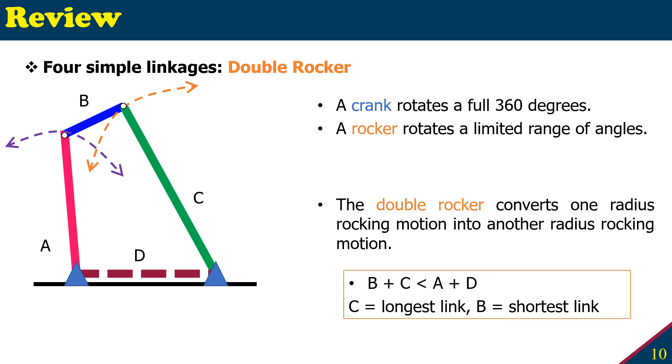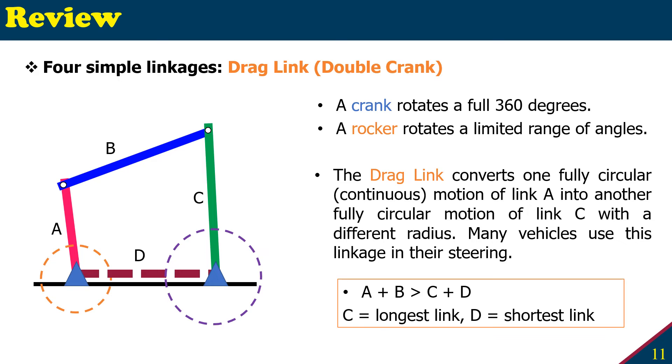So we've finished two. Let's move to our third type of four bar linkage, which we can call drag link or double crank, meaning input and output can have a crank 360 degree rotation. So a drag link converts one fully circular motion of link A into another fully circular motion of link C with a different radius. Many vehicles use this linkage in their steering.